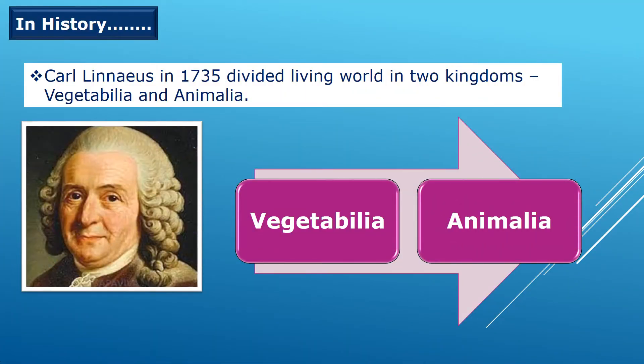In history, scientist Carolinus in 1735 divided the living world into two kingdoms: Vegetabilia and Animalia. In short, Vegetabilia refers to plants and Animalia refers to animals.